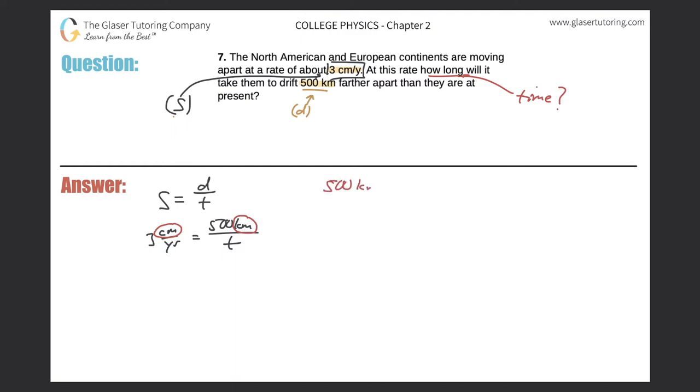So 500 kilometers, kilometers on the bottom, meters on the top. There's a thousand meters in one kilometer. Kilometers cancel, right? So this would essentially be 500 and then add three more zeros. So it becomes 500,000. And that would be in meters. Now if I know the meters, I have to still convert it to centimeters.